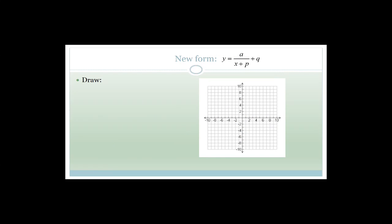Now we are doing some new things. We've got y equals a over x plus p, plus q. So we've just been doing vertical shifts — q has been moving it up and down. Do you agree that p must be doing something to do with the horizontal shift? This time they want us to draw f of x equals one over x minus two. One over x minus two — we're not looking at q at the moment, just looking at x minus two.